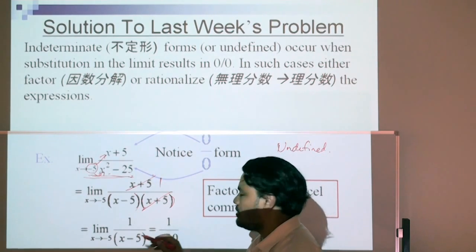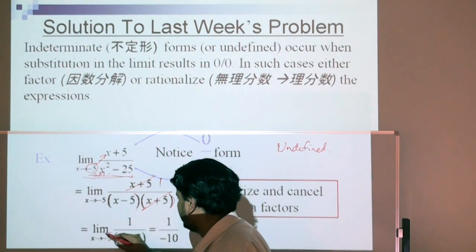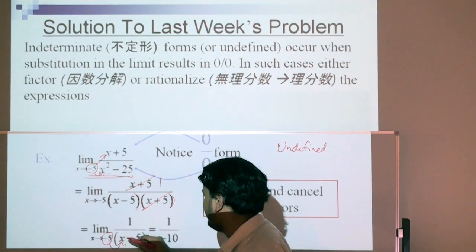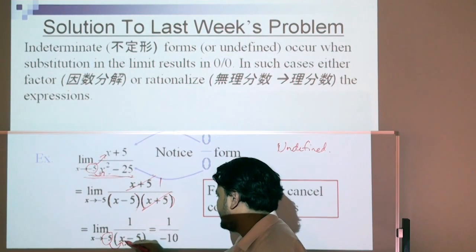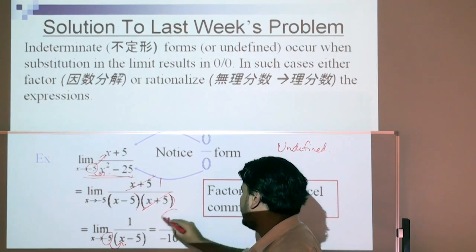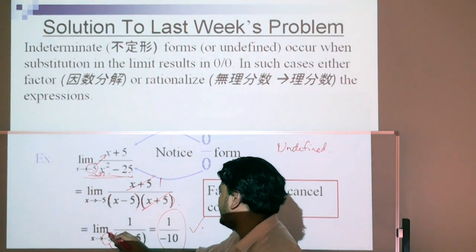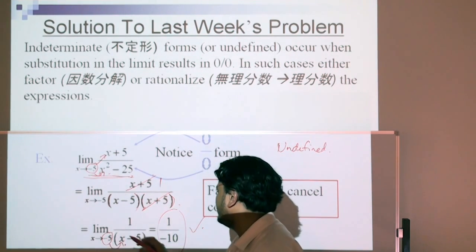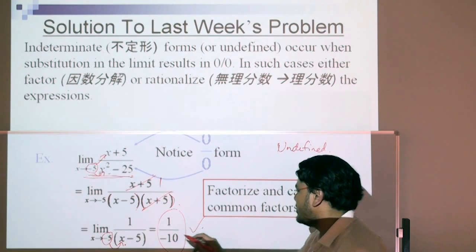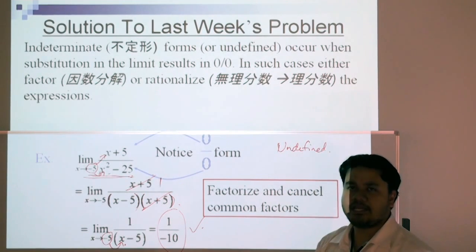Therefore, we have 1 over x minus 5. When we get to this stage, we can substitute directly and we get 1 over negative 5 take away 5, which is negative 10. The limit of the equation as x approaches negative 5 is 1 over negative 10.